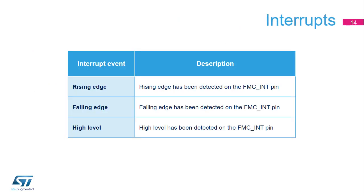The NAND controller offers three interrupt sources: rising edge, falling edge, and high level detection on the FMC INT pin when it is connected to the ready/busy signal from the NAND Flash memory.